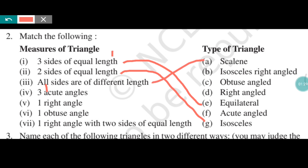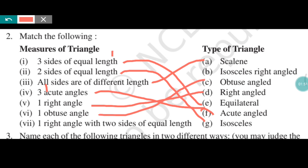Three acute angles — if all three angles are acute, then this type of triangle is an acute angle triangle. One right angle — if one angle is a right angle, it is a right angle triangle. If one angle is obtuse, then it is an obtuse angle triangle.